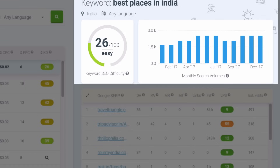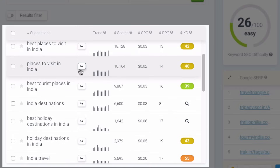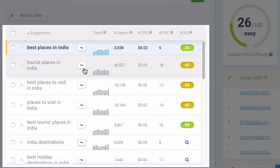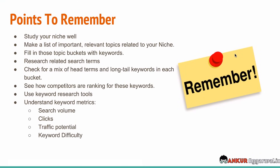A score of 26 out of 100 means that a keyword will be fairly difficult to rank, but not too difficult. Keyword Finder also gives you a list of all related keywords like 'tourist places in India' and 'best tourist places in India,' along with search volume and CPC. So what should you remember while doing on-page SEO? The most important metric is the niche — your niche should not be too competitive and should be easy to rank. Whenever you're writing an article, make sure you do comprehensive research and make a list of all the important relevant topics related to your niche.